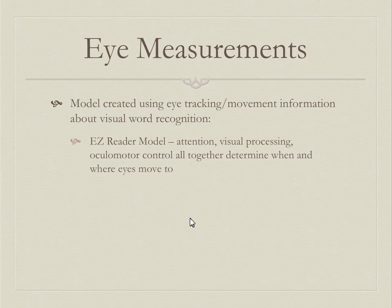Each model has a different approach to thinking about reading and word recognition. This is solely about individual word recognition, not reading as the complex thing we'll cover in a later chapter. Using eye tracking data and early research, the E-Z Reader model was created. It incorporates attention, visual processing, and oculomotor control to determine how your eyes are going to move.